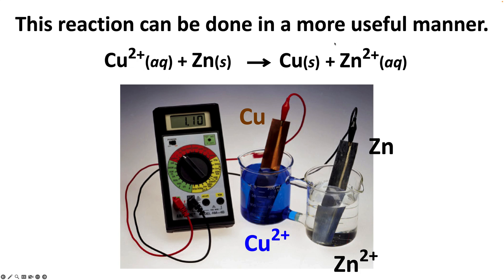We use all of the species involved in this reaction — copper 2+, copper, zinc, and zinc 2+ — but we make what are called half cells, where the two components of a given species are together. Copper 2+ and copper solid are in one half cell: a solution of copper 2+ with a piece of copper metal submerged in it. Separately, we have a beaker with zinc 2+ solution and a piece of zinc solid submerged in it. These pieces of metal are called electrodes, and we connect the electrodes with an external wire.